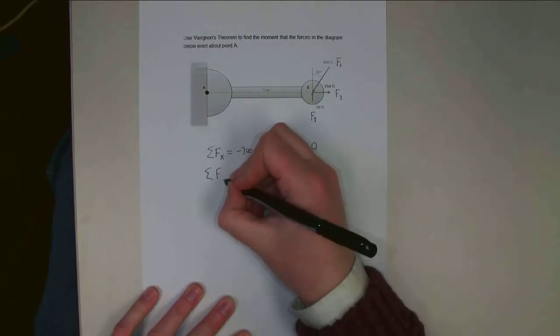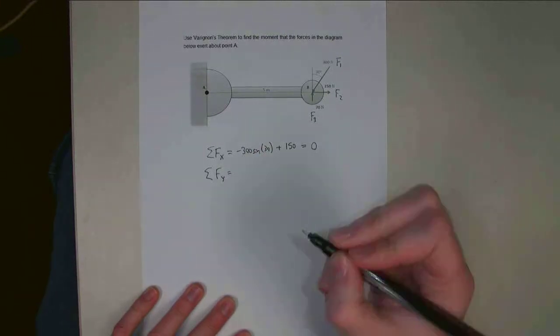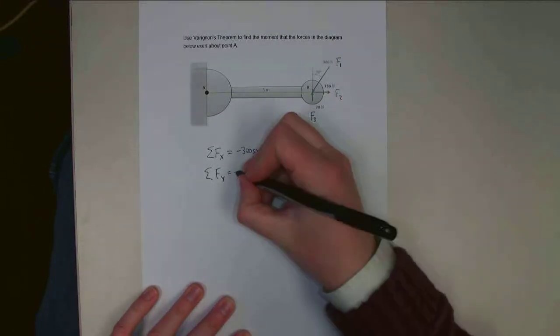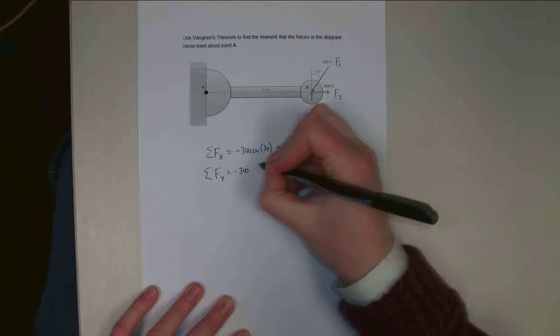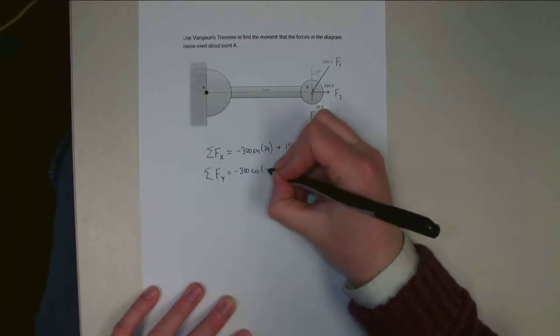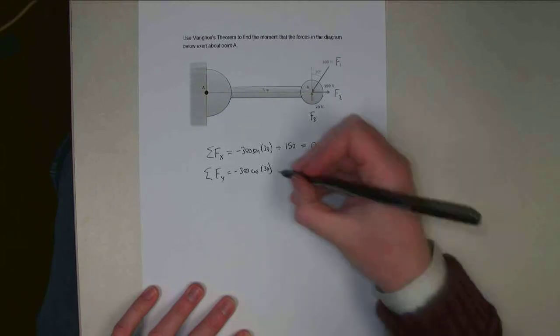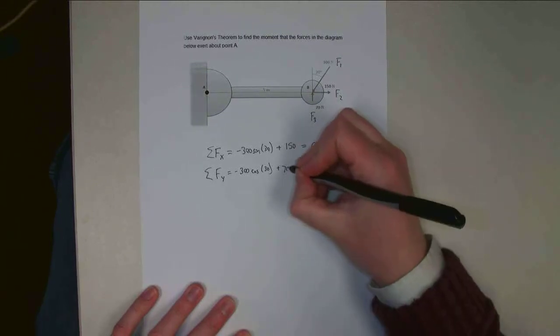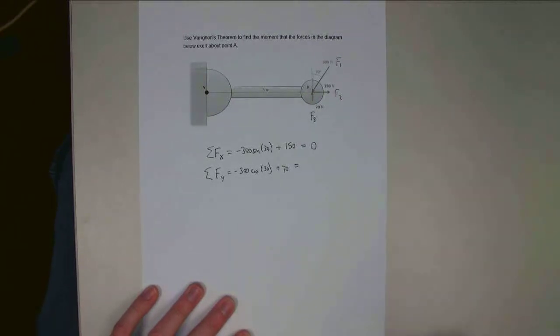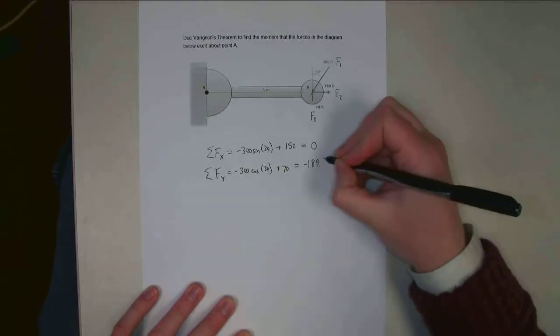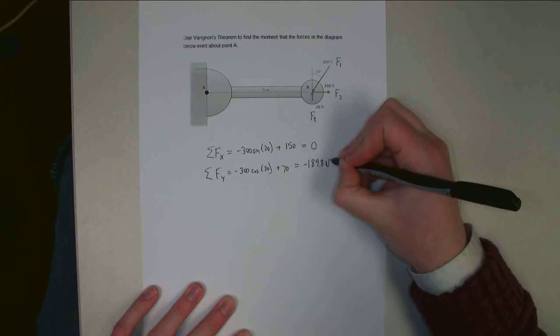So now sum of forces in the y direction, I'm going to have negative 300 times the cosine of 30, and I'm going to have positive 70 newtons here. And the sum of those two numbers is going to be negative 189.8 newtons.